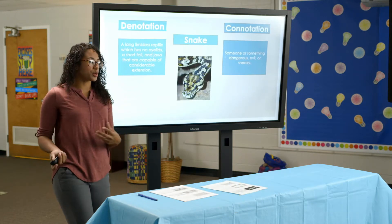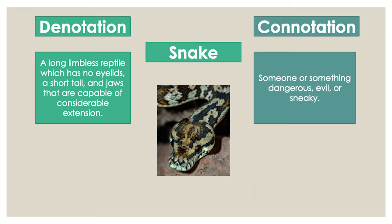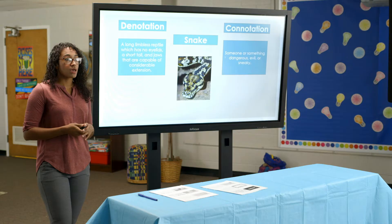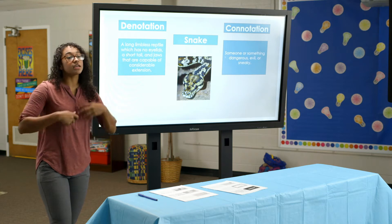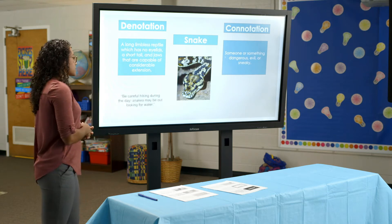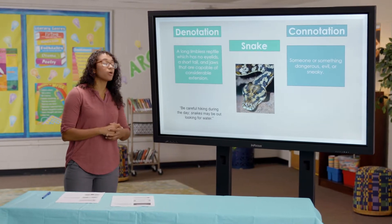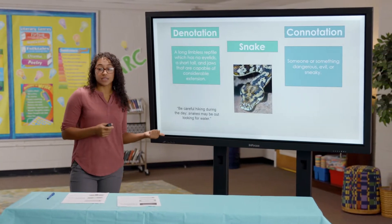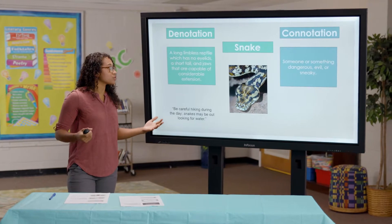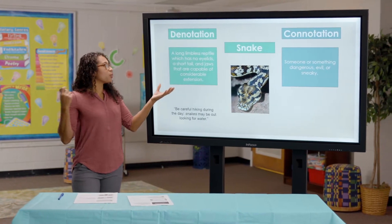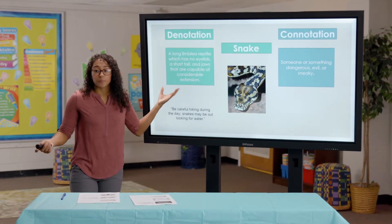Let's look at an example with the word 'snake.' The denotation of snake is a long limbless reptile which has no eyelids, a short tail, and jaws that are capable of considerable extension. You might see the denotative meaning of a word used like this: 'Be careful hiking during the day, snakes may be out looking for water.' In this context, this person is referring to a long limbless reptile with no eyelids and a short tail.